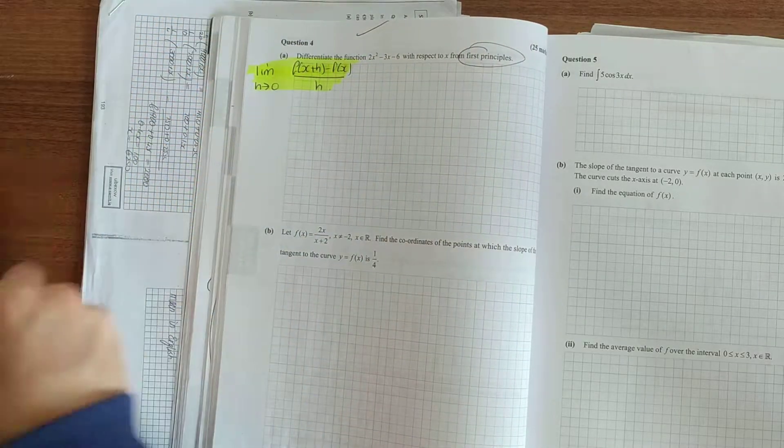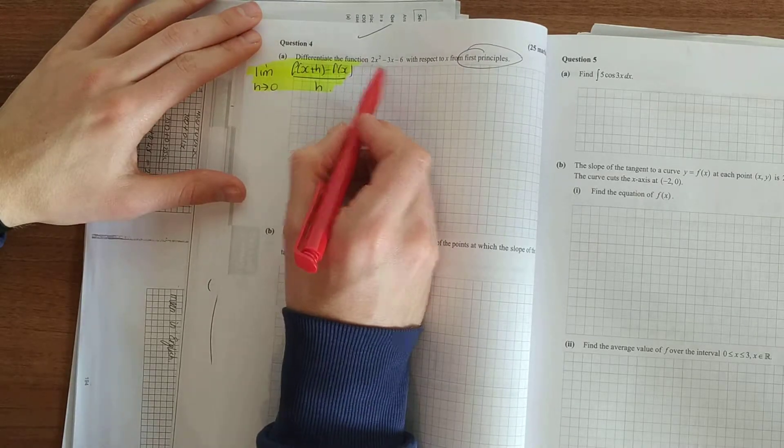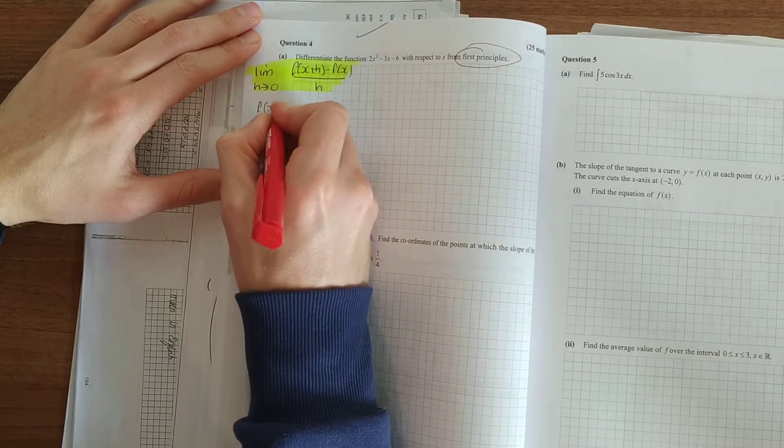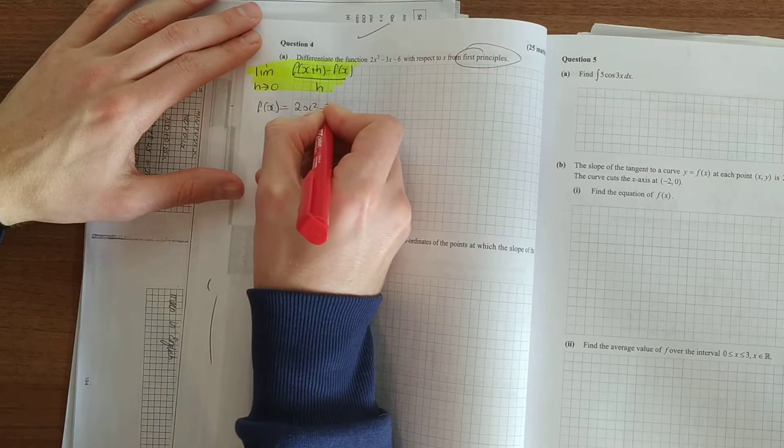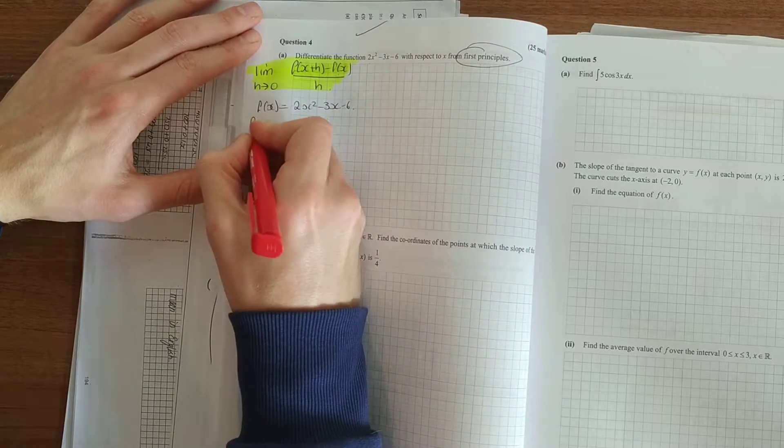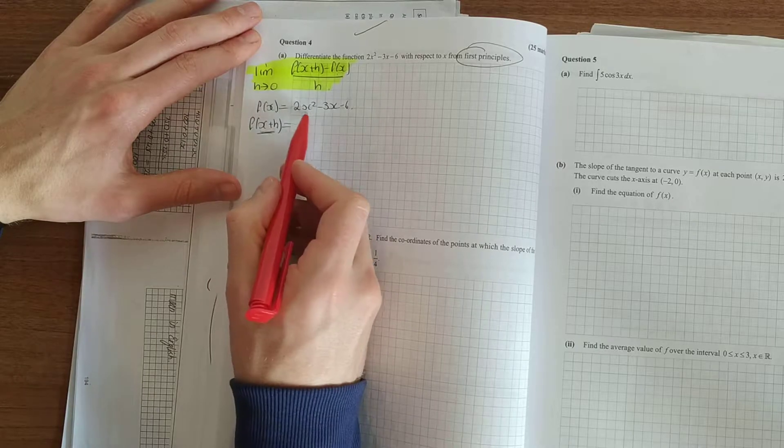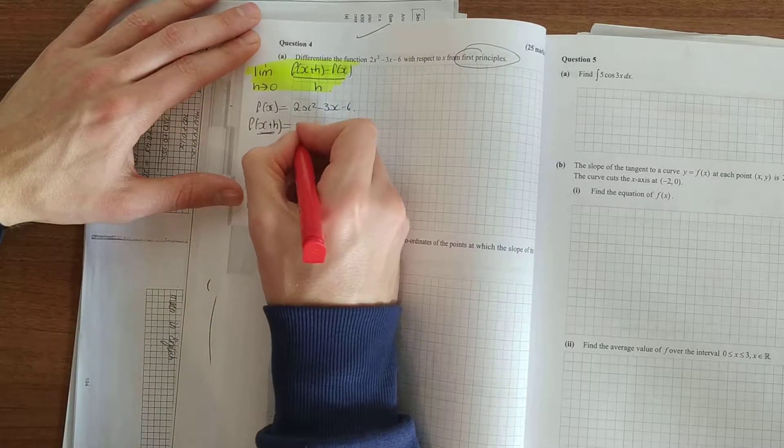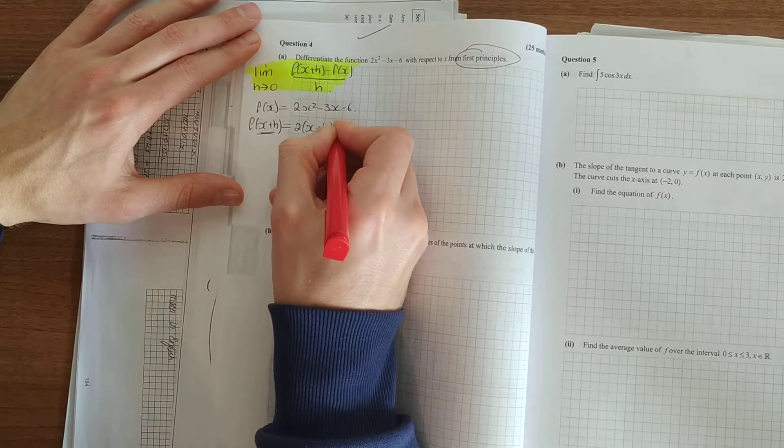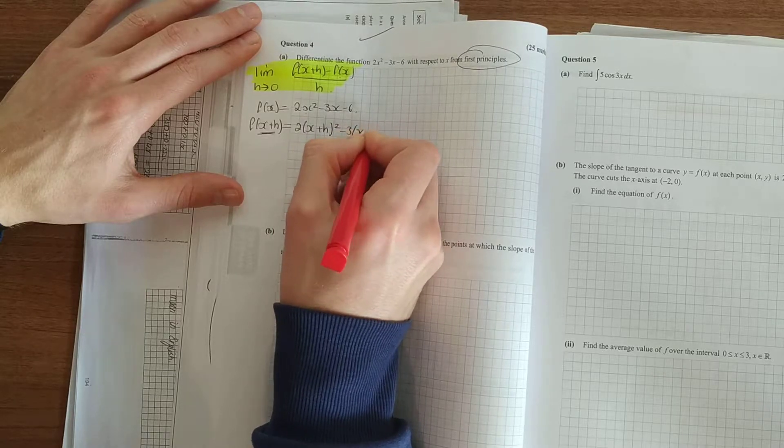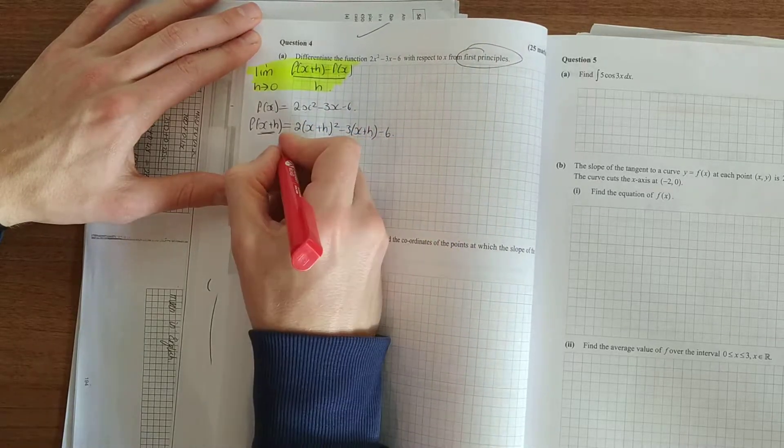And now we're just going to go through these stepwise. We have our f(x). Our f(x) is the original function. f(x+h). Simply sub in x+h anywhere we see your x.